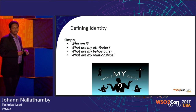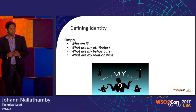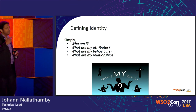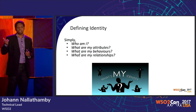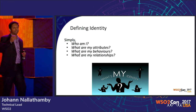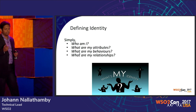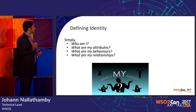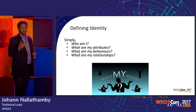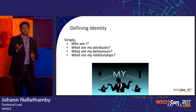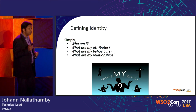We can narrow identity down to four aspects: who am I; what are my attributes — my age, my gender, my nationality, my language; what are my behaviors — important for things like behavioral analytics and fraud detection; and what are my relationships — with other identities, applications, identity providers, and devices in the context of IoT.